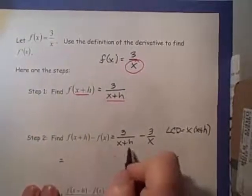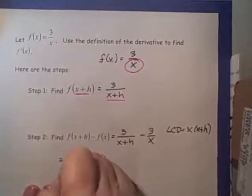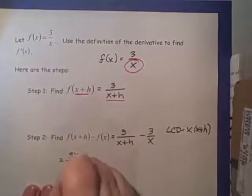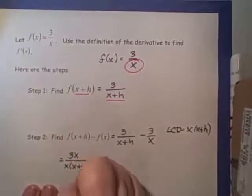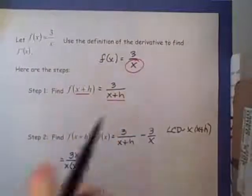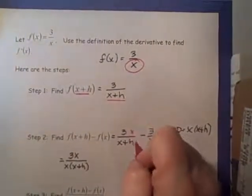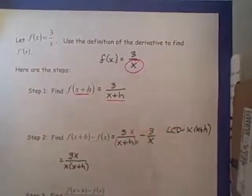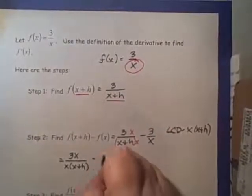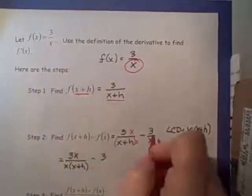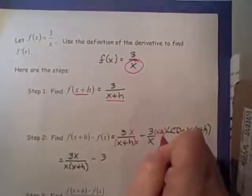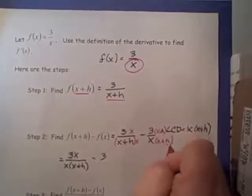This first fraction needs an x, so I'm going to have 3x over x times x plus h. I just multiplied both numerator and denominator by x. In the second fraction, I need an x plus h, so I multiply both numerator and denominator by x plus h.